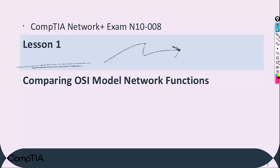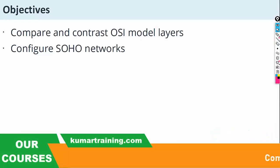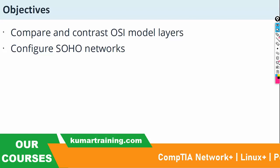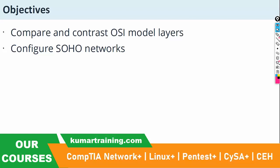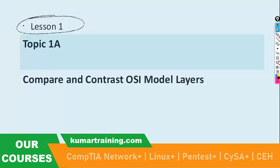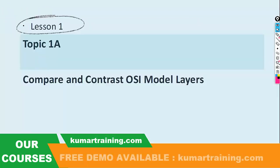In this section we are going to discuss comparing OSI model network functions. The objective of this lesson is to compare and contrast OSI model layers and configure SOHO networks. First we are going to discuss the compare and contrast of the OSI model layers.